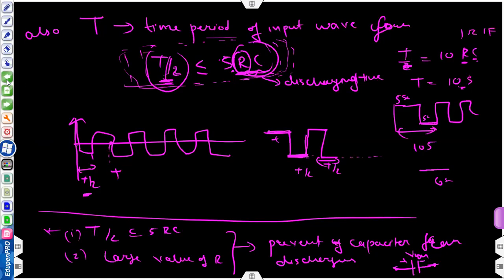Almost time is up. Please revise this - I will share the recorded lecture. In the next lecture we will apply a simple KVL analysis. The capacitor will remain fixed at Vm in the positive half; in the negative half it will not get discharged.